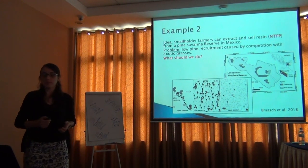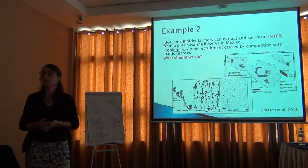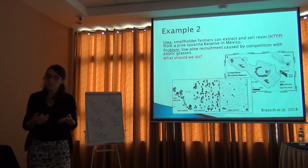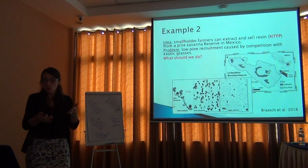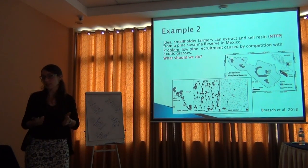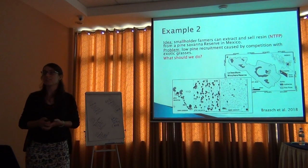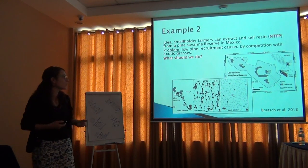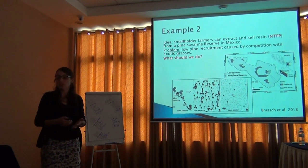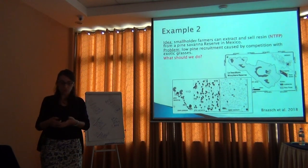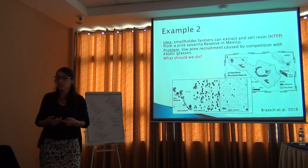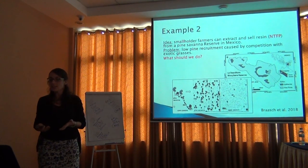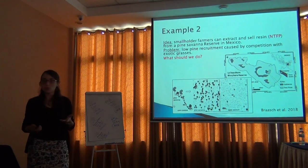The problem seems to be an invasive grass species growing too tall, preventing small pine trees from establishing. The management question was: should we let more cows in to overgraze the invasive species? Should we burn the invasive grass? Should we just plant trees? What should we do?